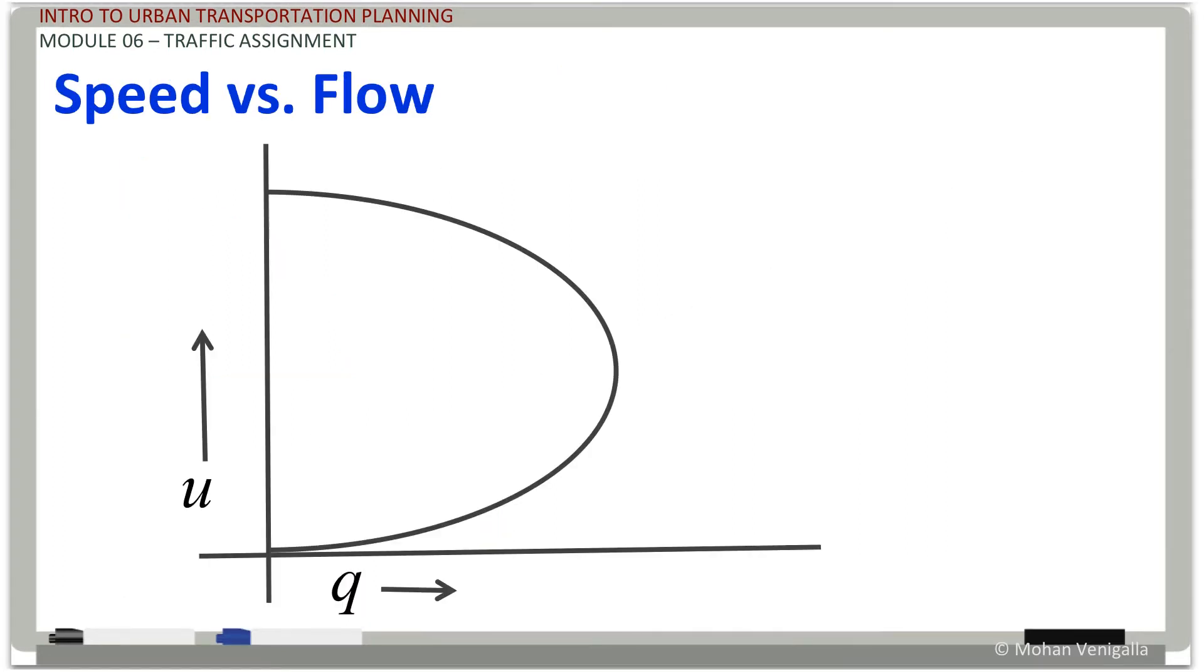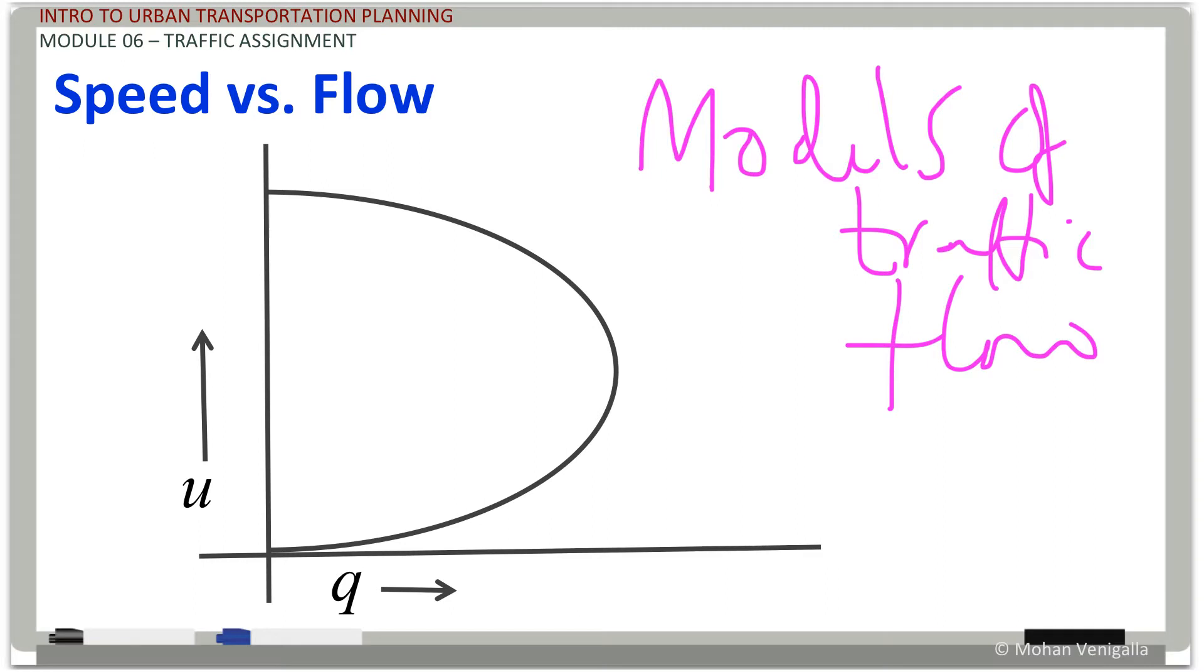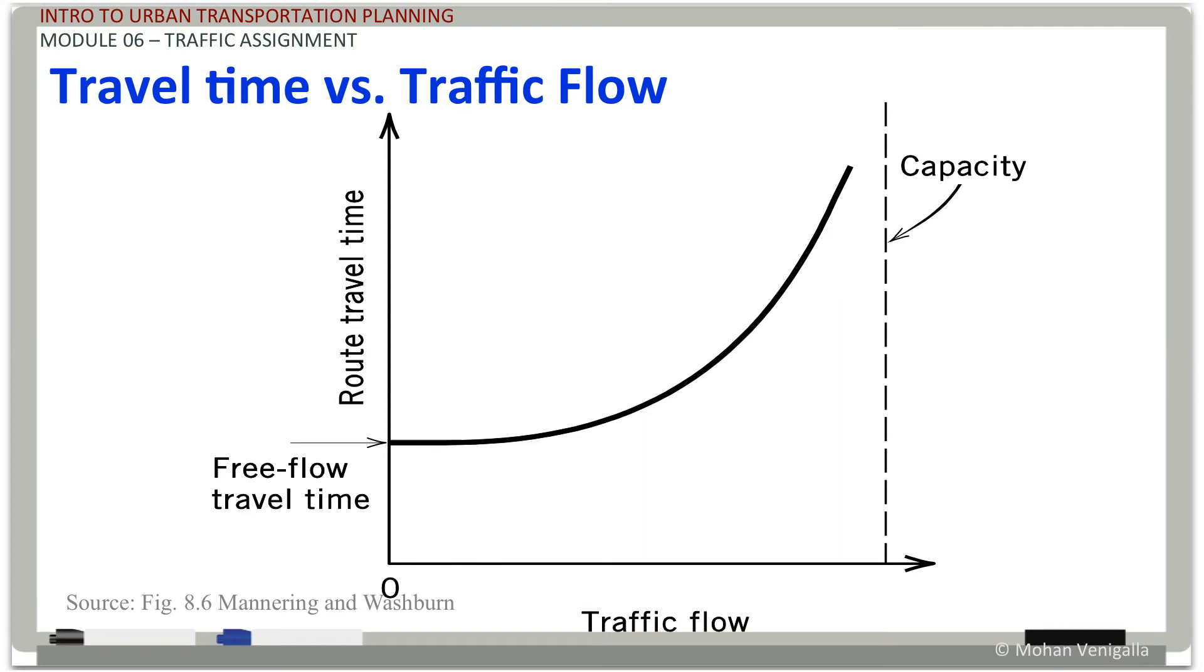If this were your speed-flow relationship, how does the travel time-flow relationship look like? It looks like this. If your speed-flow relationship is like that, your travel time to traffic flow, which is q here, is like this. You have this being your free flow travel time. So far so good. But when we learned about models of traffic flow in your intro course to transportation engineering, we know there is something like this. It's a parabolic relationship between speed and flow.